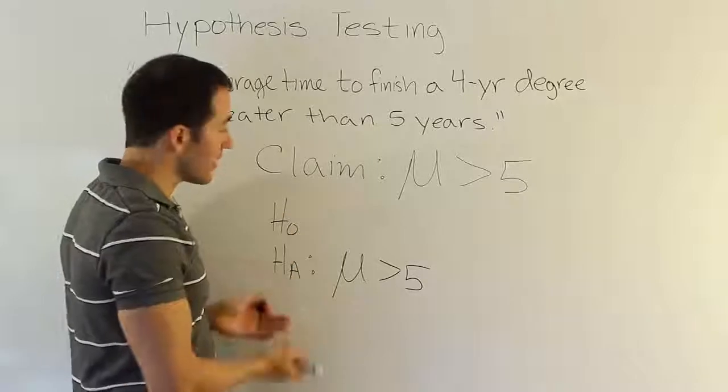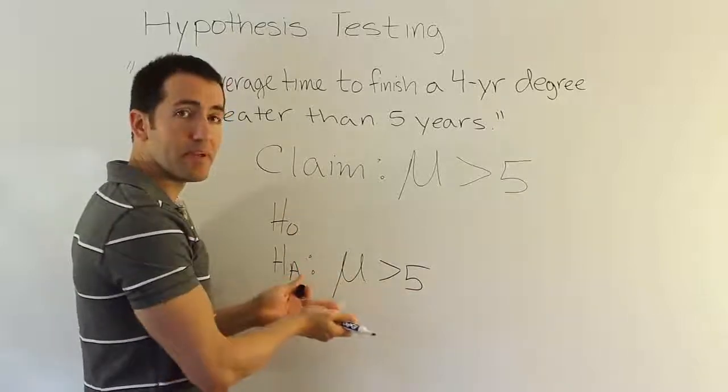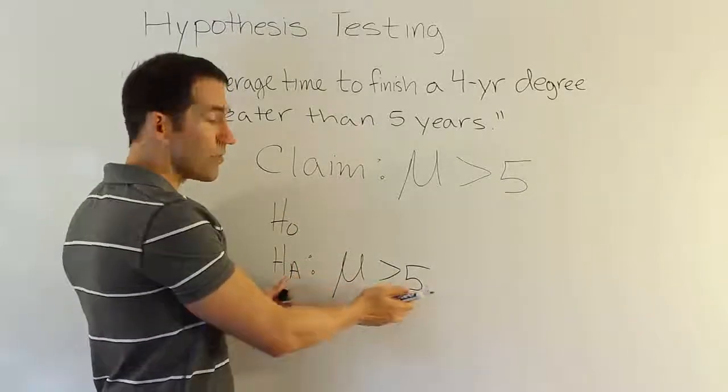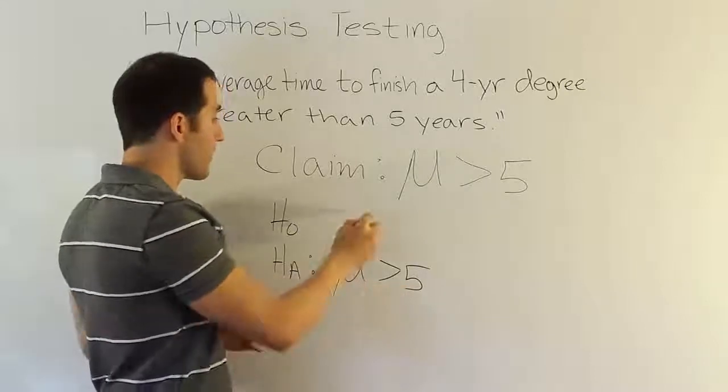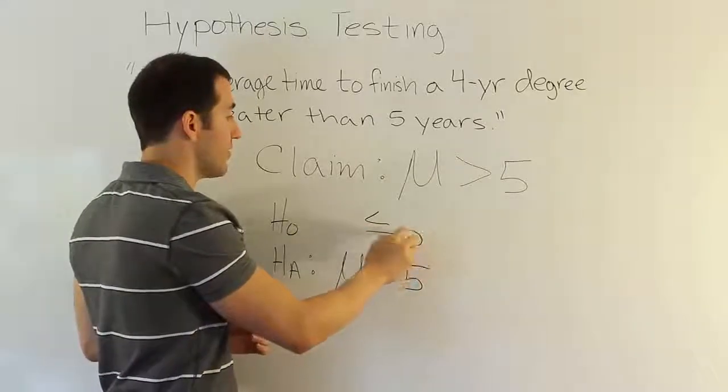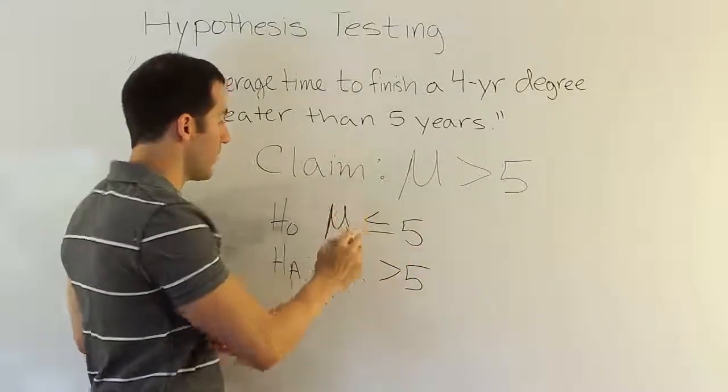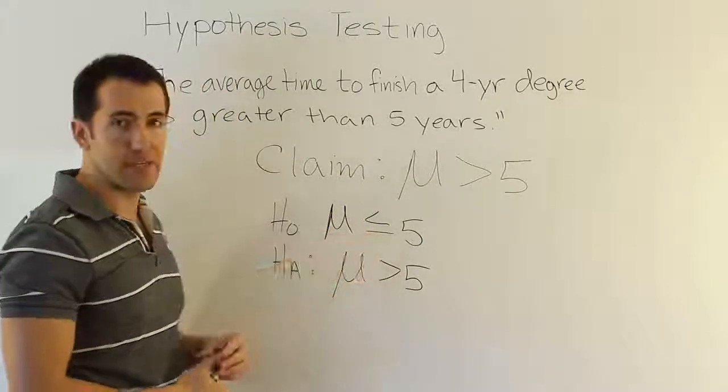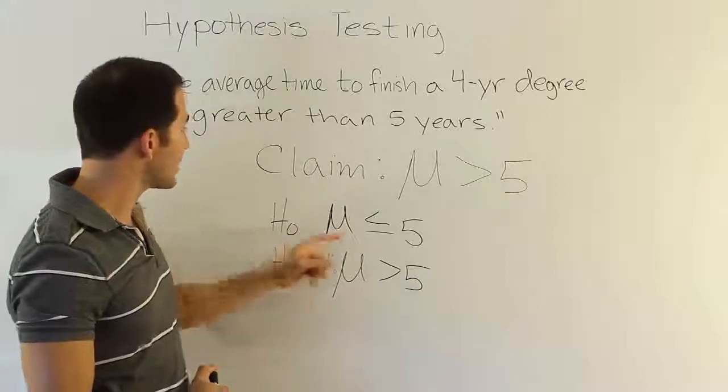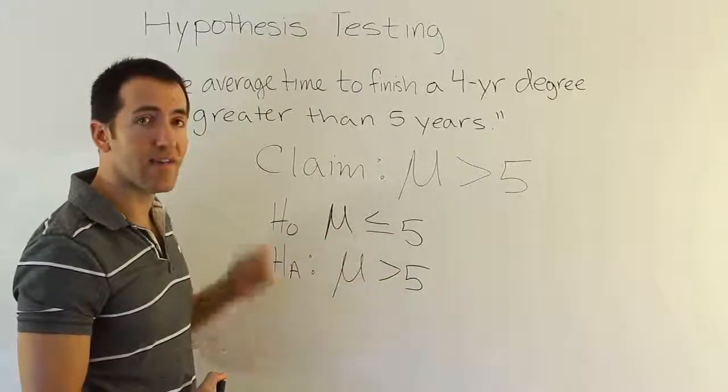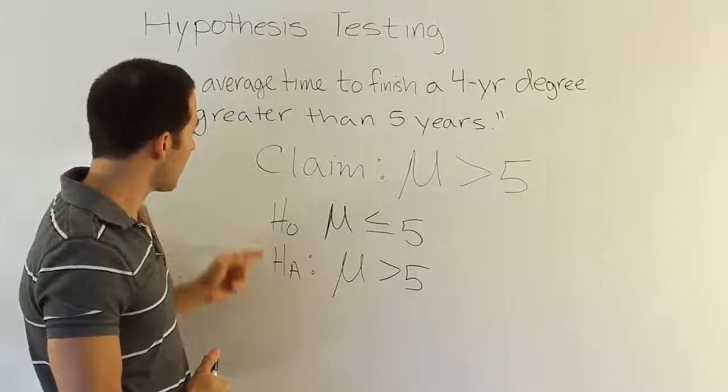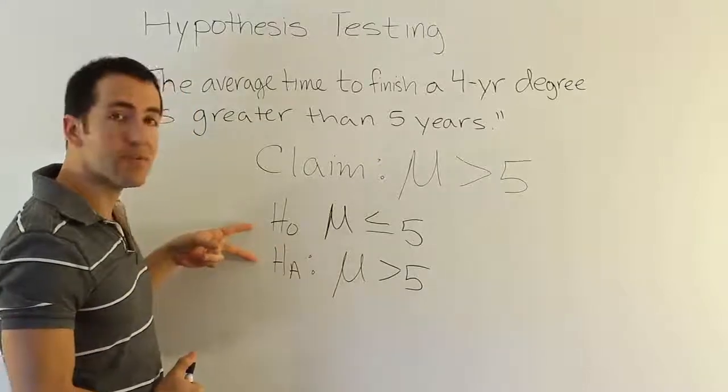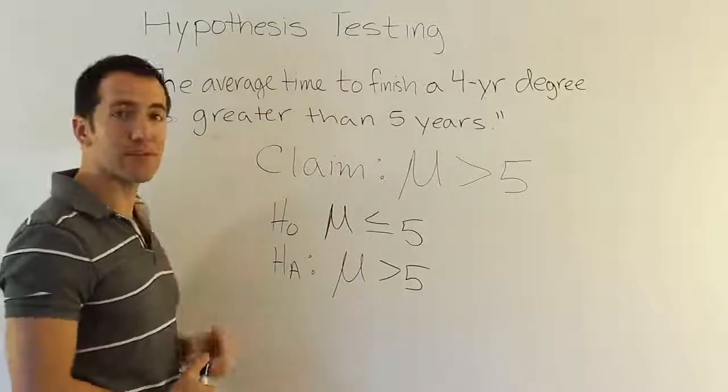The H₀ is going to have to express the opposite opinion. If the mean is not greater than five, it must be less than or equal to five. That is how you come up with the null hypothesis when you have given the alternative hypothesis. You just find the opposite relationship. You see, of course, that now H₀ has that desired equal sign like it's supposed to. We've done our job well. This is actually our step two of the hypothesis testing procedure.